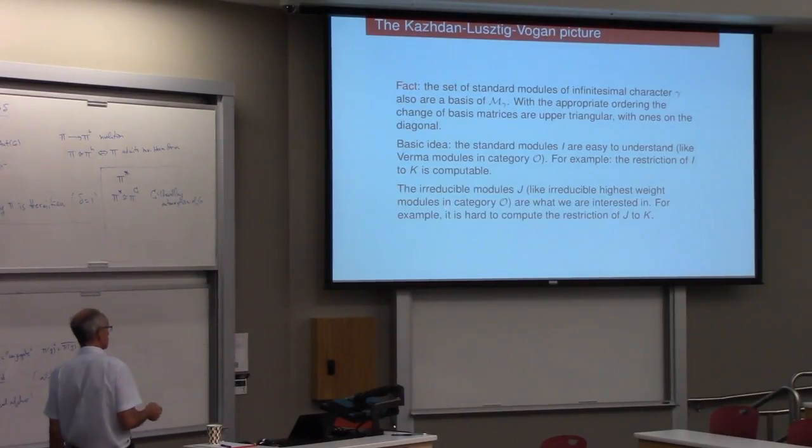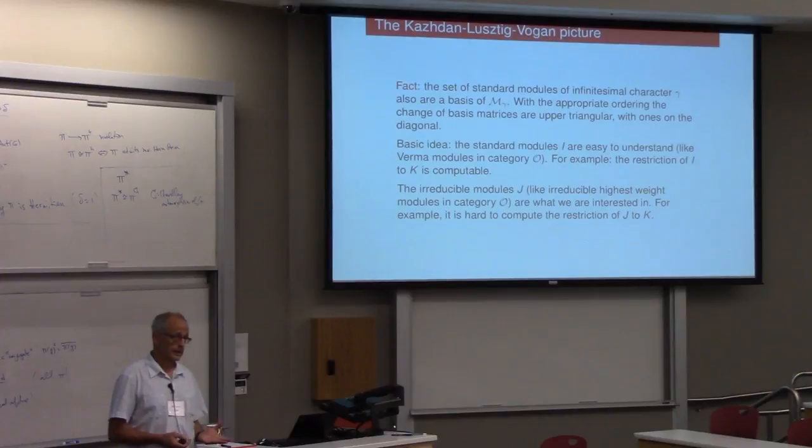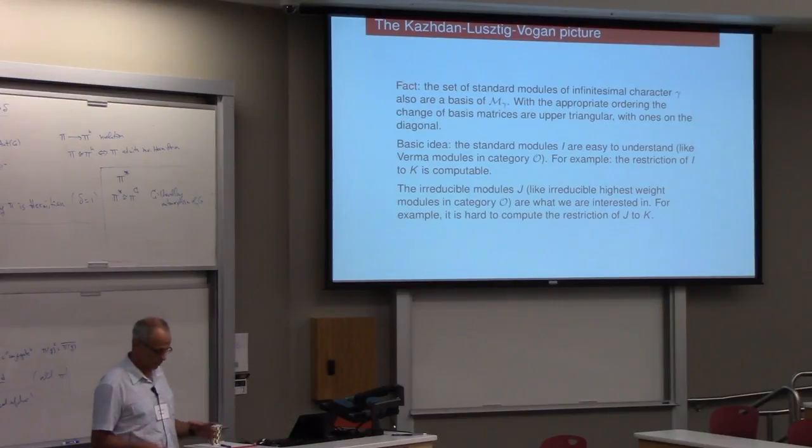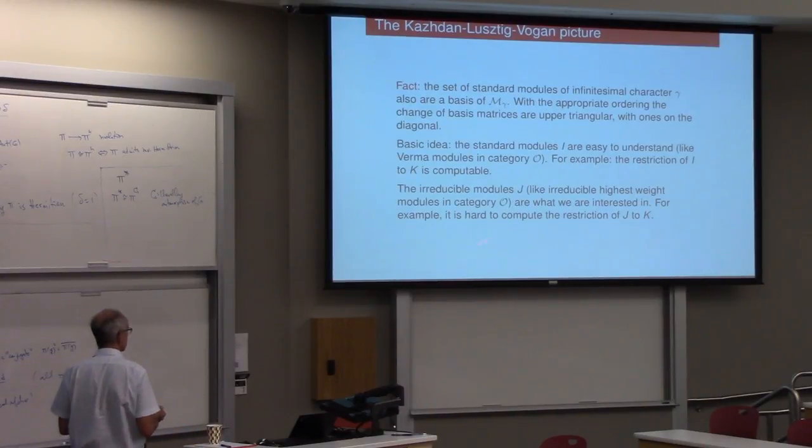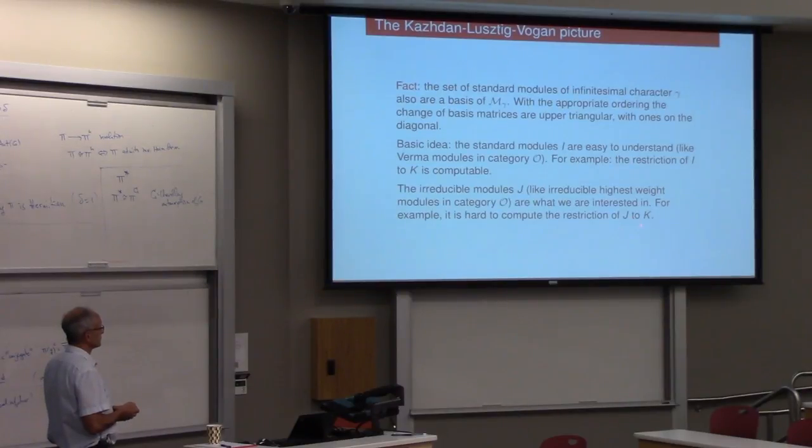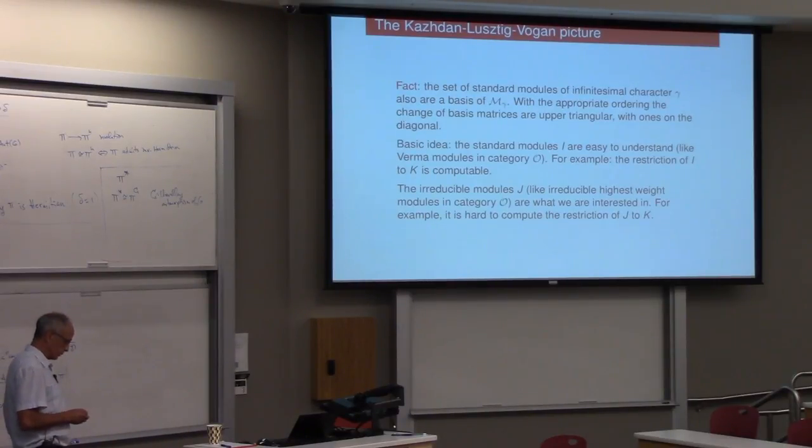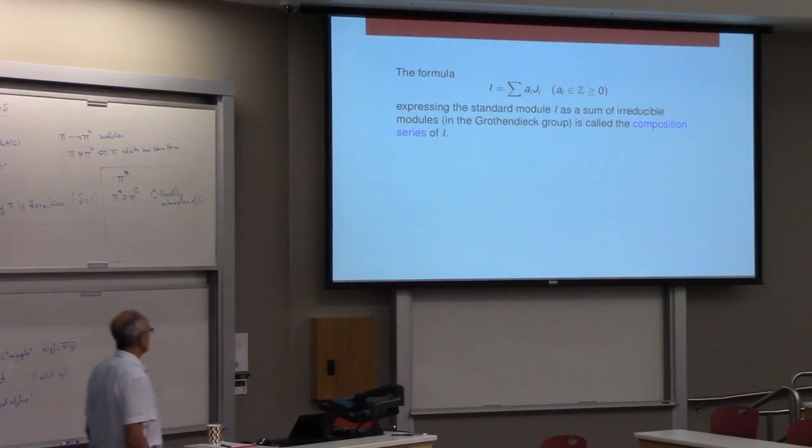On the other hand, the irreducible modules, they're like the irreducible highest weight modules in category O. In some sense, that's what you really care about. And so in category O, you might be asking for one of the weights of an irreducible finite dimensional representation, for example. The analogous thing in our category is taking irreducible representation and compute its restriction to K. That is a hard problem. And in general, there aren't, there are not good techniques for solving it. Well, just the one, the one I'm about to sketch, is the only one that I know that's general.